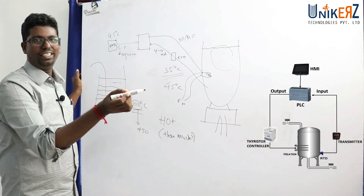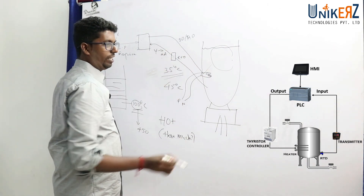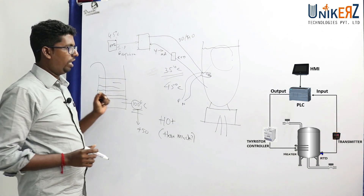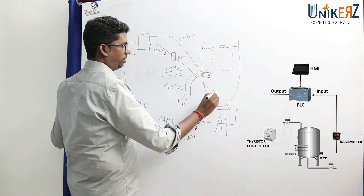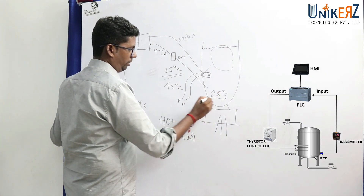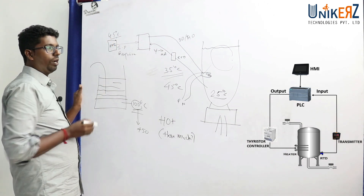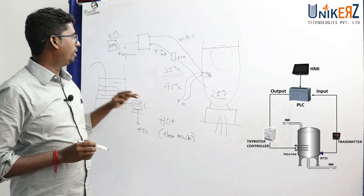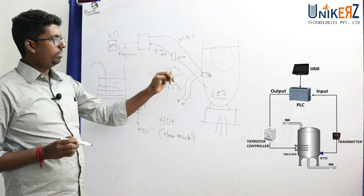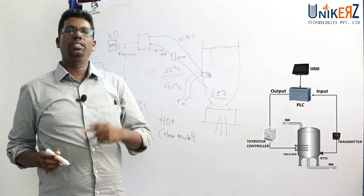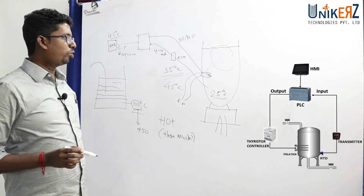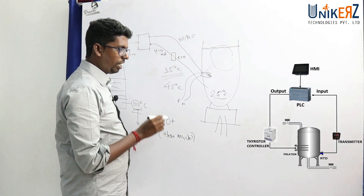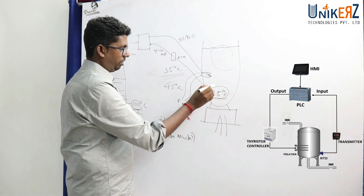Decision. Yes — in this heater, turn it on. For example, actual is 25 degree Celsius, the set point is 45 degrees. Actual is lesser than the requirement. Then the action is: turn on the heater up to 45 degrees. So above 45, once the actual temperature is reached, the heater turns on until that point.